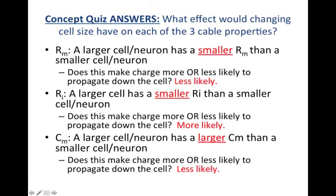A larger cell or neuron has a smaller membrane resistance than a smaller cell. Having smaller resistance here means charge is actually less likely to propagate down the cell in a larger neuron. Second, a larger cell has a smaller internal resistance, making it more likely that charge will propagate down the cell — smaller resistance means more current flow. Finally, a larger cell has bigger capacitance, making it less likely the signal would propagate, because some charge is more likely to stay near the membrane rather than propagating all the way down.